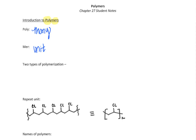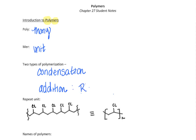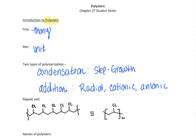There are condensation polymerizations and then there is something called addition polymerization. In addition polymerization there are subclasses of radical polymerization, cationic, and anionic. Condensation polymerizations are a type called step growth, and these are similar to reactions we've previously seen like Fischer esterification.